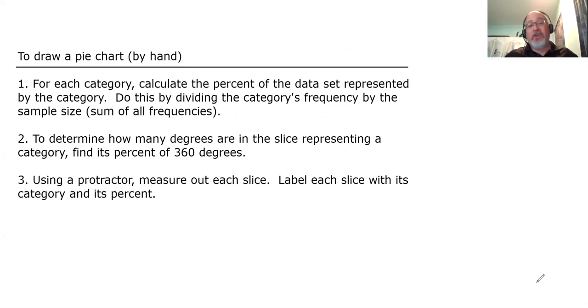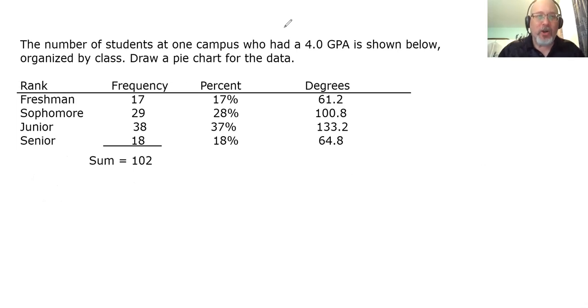Well, if you're going to do it by hand, step three, using a protractor, measure out each slice. Label each slice with its category and its percent. Now, I'm not expecting people to go out to buy a protractor, much less draw a pie chart by hand. I am going to show you how I would do it, and then I'll show you how it looks both in your homework and on your test. Okay, so to draw this pie chart, let's start with a circle. It's a good place to start. I always draw the slices starting at 12 o'clock, so going straight up. And then I always do the slices in the order that they are given. So we're going to do the freshman slice first.